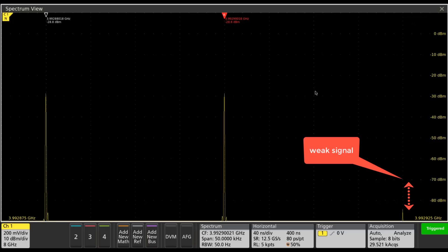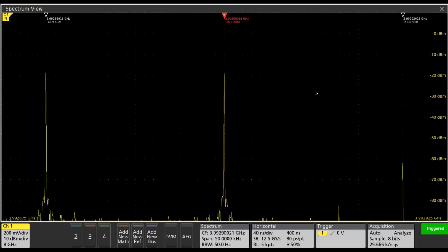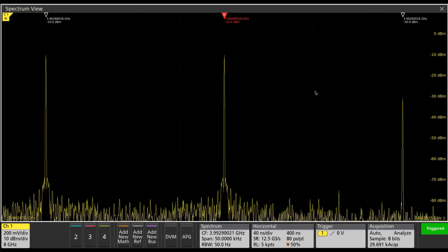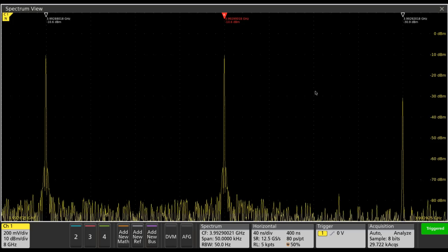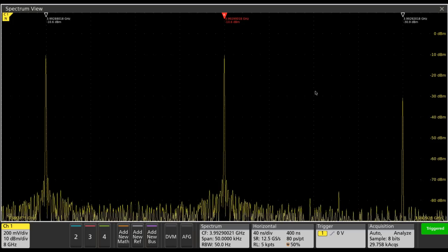So even though we've attenuated the input signal, we've attenuated the generation of that third-order intermodulation distortion product by three times as much. So there is a benefit to using attenuation in conditions where you've got high signal levels surrounding a low-level signal you're trying to see.